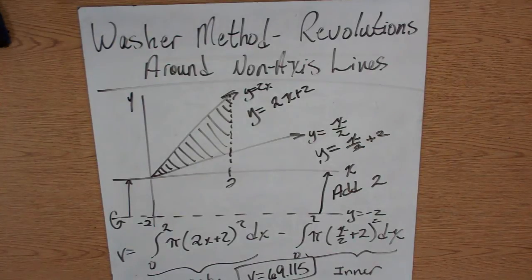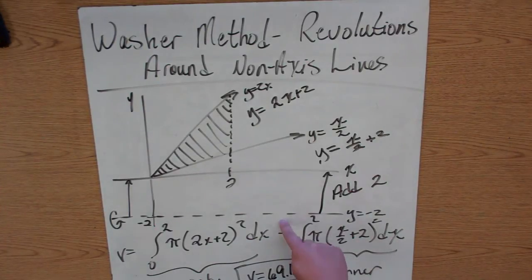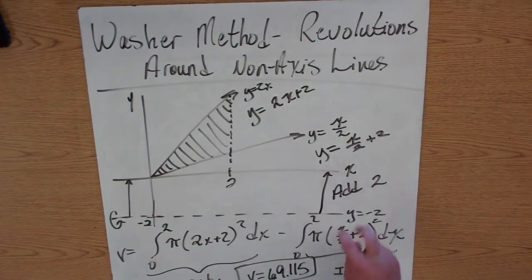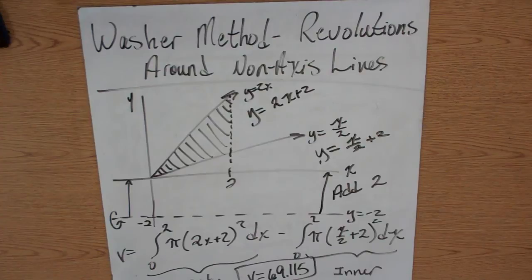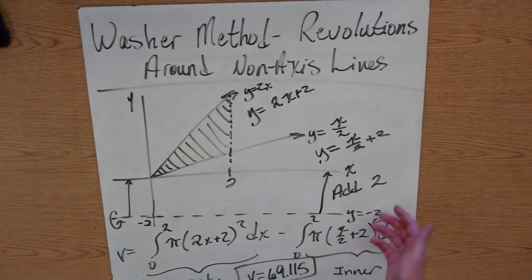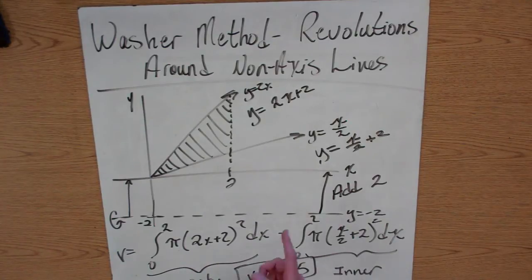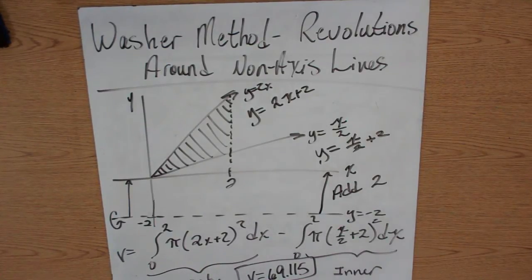So, you're doing the same thing except you have to figure out what do I got to do to get this line up to here. To get it up there, all I got to do is add 2. So since all I got to do is add 2, just add 2 to both functions, then do your integration, subtract the inner from the outer, and you're done.